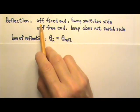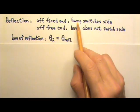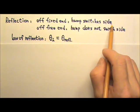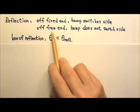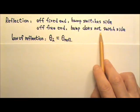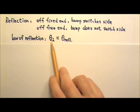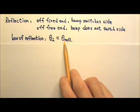When a wave reflects off of a fixed end, the hump switches side. So an upward hump turns into a downward hump. When a reflection goes off a free end, the hump stays the same side. The law of reflection says that the angle of incidence equals the angle of reflection.